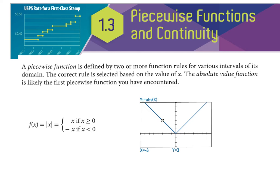Think about solving absolute value equations — you set up two equations. You set it equal to the positive and set it equal to the negative, and you solve two equations. That's a type of piecewise function. It could be a step function like greatest integer, or an absolute value function. When you graph a piecewise function, you can literally see it is pieces of different functions put together, which is why it's called piecewise.